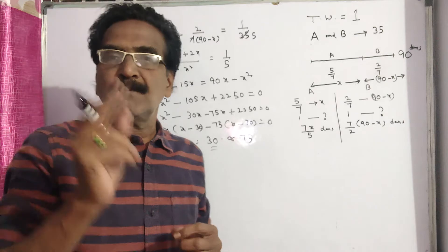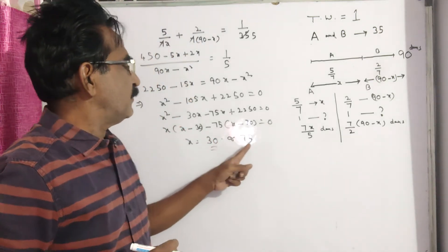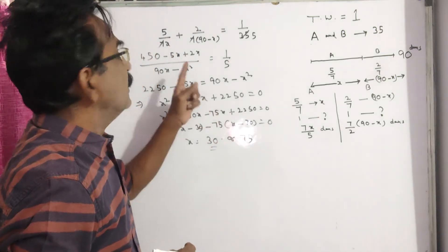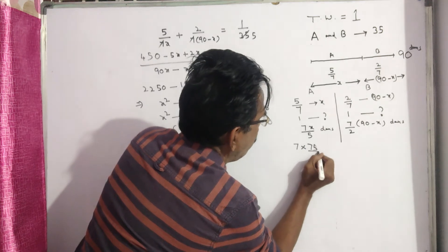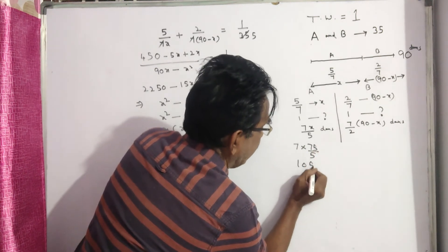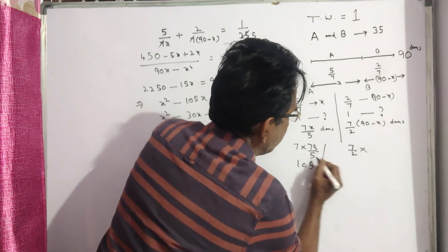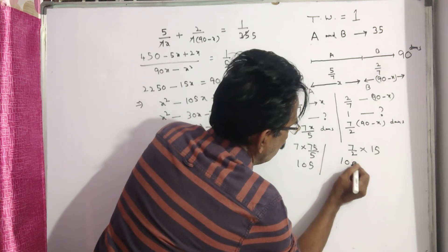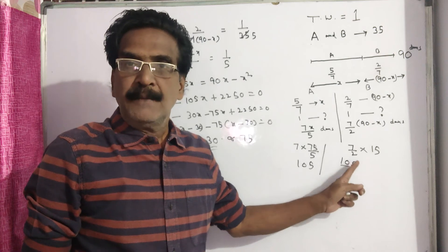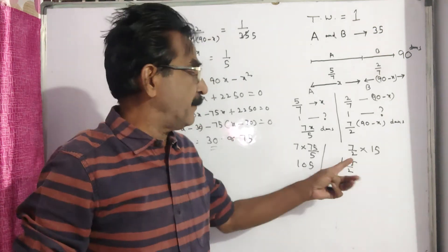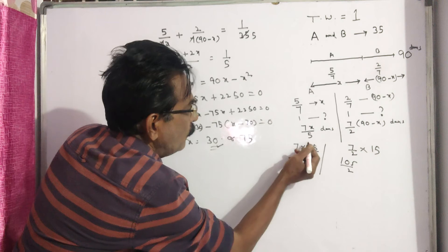One more condition is given in the problem: A is more efficient than B. If we take X equal to 75, then A can complete in 7 into 75 by 5, which is 105 days, and B completes in 7/2 into (90 minus 75), which is 105/2 days. Then B becomes more efficient than A, which contradicts the condition. So X must be taken as 30.